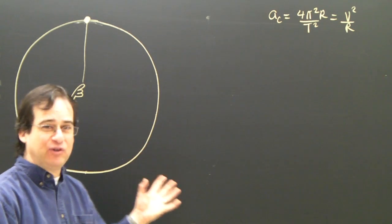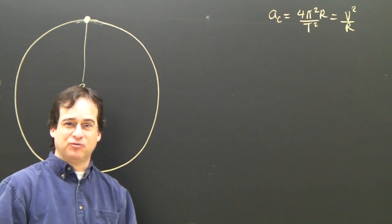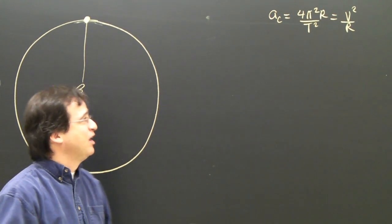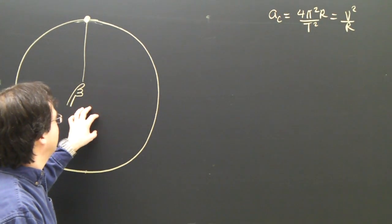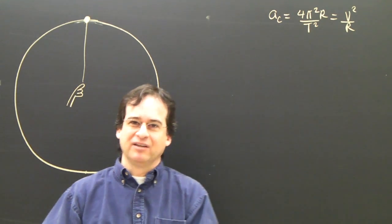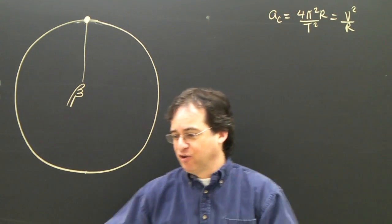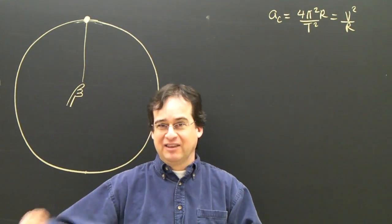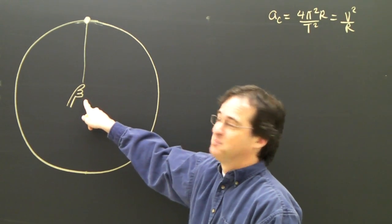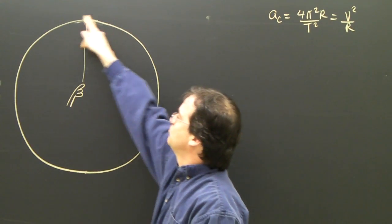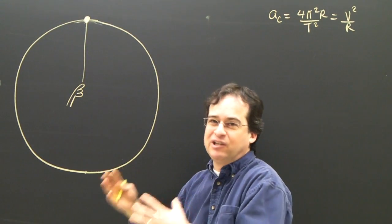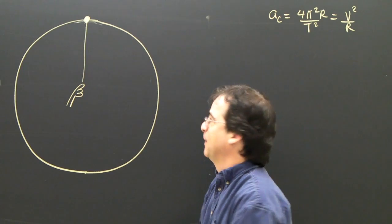We're going to give you an overview of centripetal force so you get the bigger picture. The problem I'm looking at is you take something, tie a string to it, and swing it around in a circle. This is my hand swinging a rock in a circle, and I just want to generally look at what's happening.